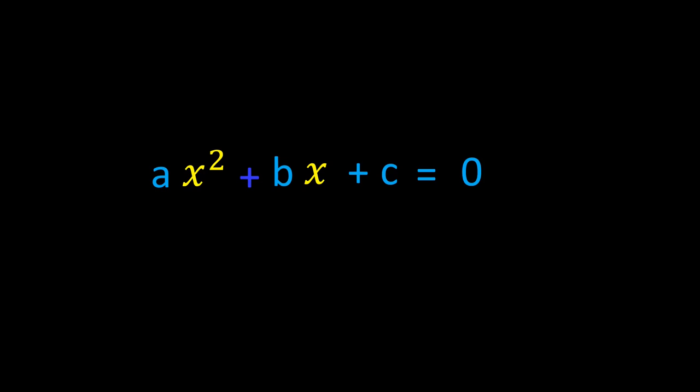In this video, we are going to derive the quadratic formula for finding roots of the quadratic equation by generalizing the method of completing the square. For this, I am going to take the standard form of the quadratic equation: ax squared plus bx plus c equals 0.